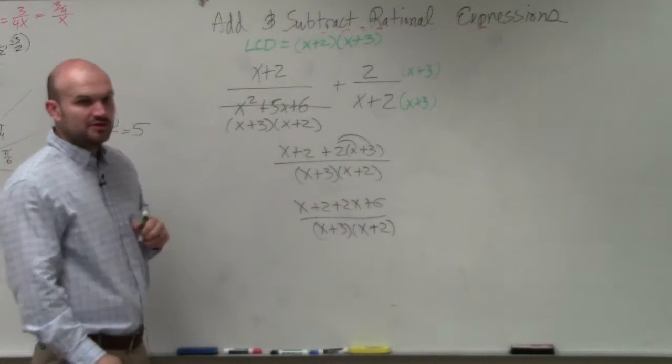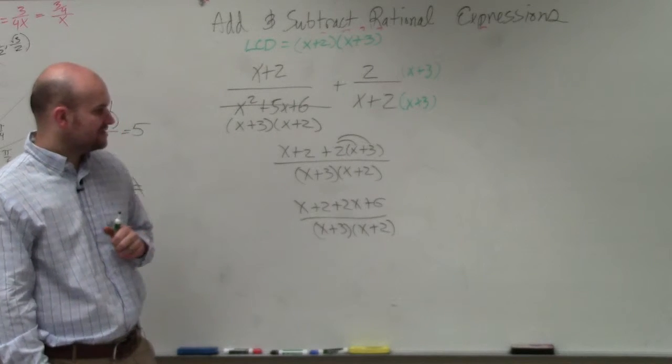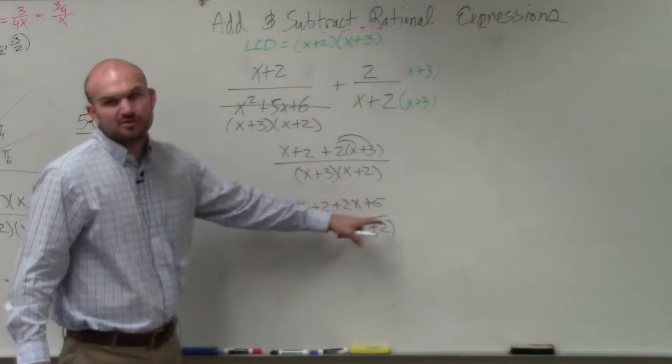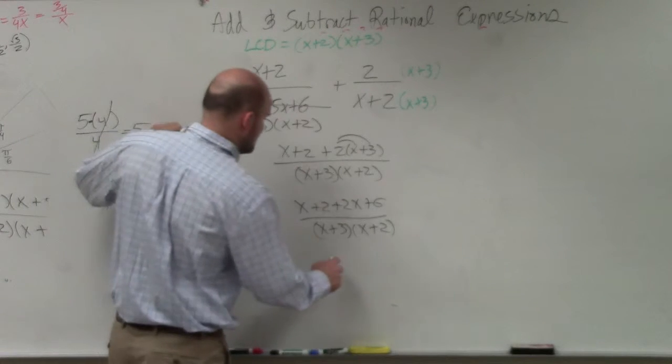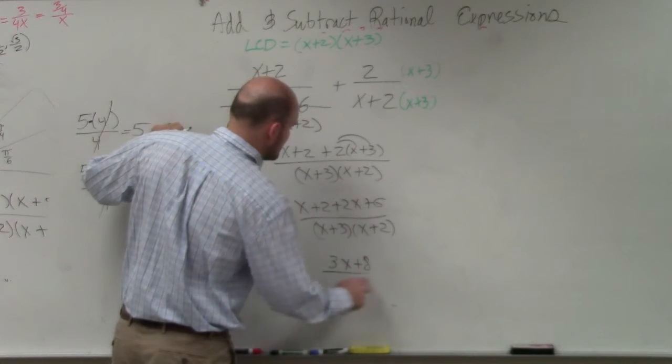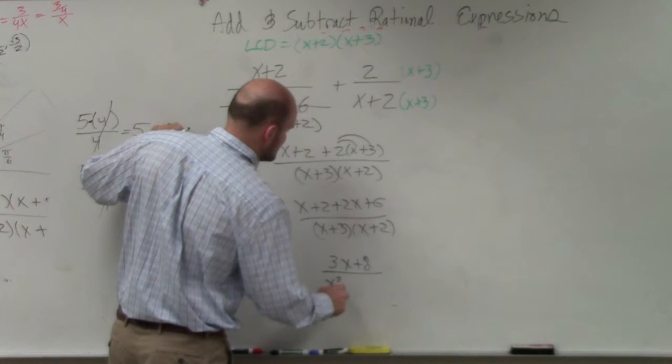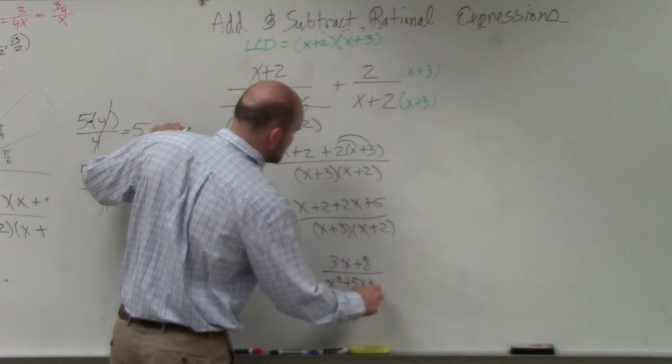And then can we combine all the terms in the numerator? We can do x plus 2x and 2 plus 6. And you could also multiply this back out into there. The answer might look like that. So your final answer could look like 3x plus 8 divided by x squared plus 5x plus 6.